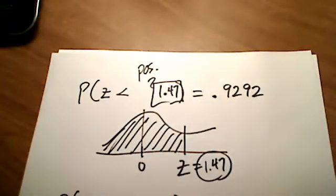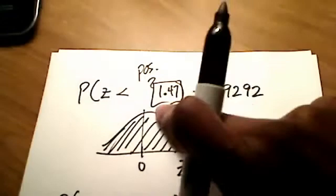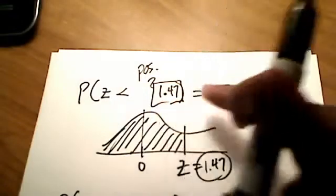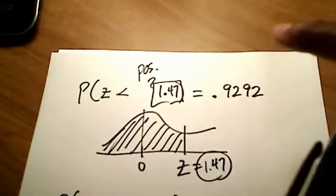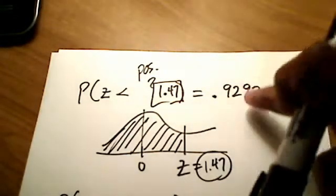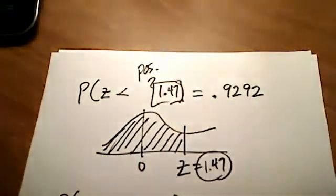So I can play the game backwards. Instead of giving you the z and asking what's the area shaded to the left, I could ask you: given the area, what's the z? That's playing the game backwards.